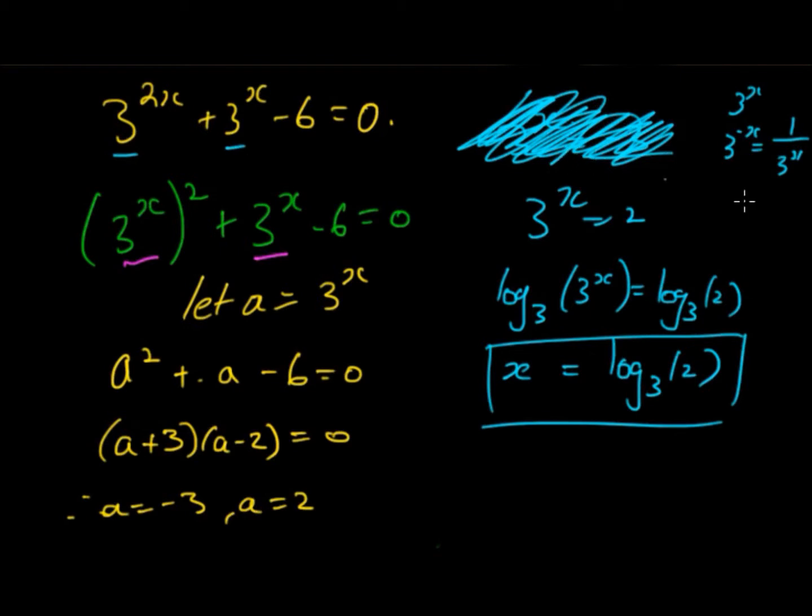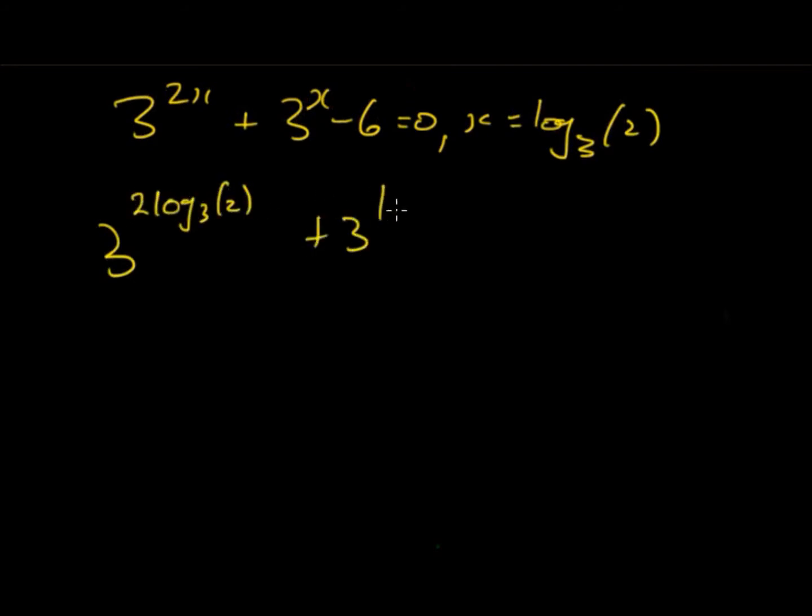So if I want to check this solution I can do that. The equation was 3^(2x) + 3^x - 6 = 0. And we found that x = log₃(2). Substituting this in we get 3^(2log₃(2)) + 3^(log₃(2)) - 6.